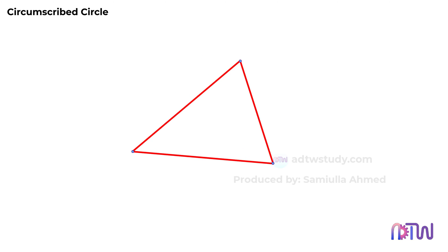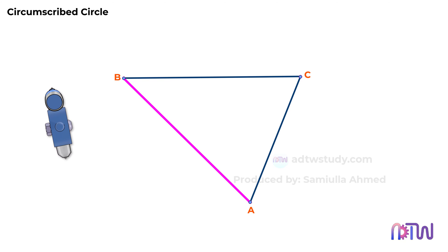Consider a triangle of any shape. To circumscribe a circle, we need to bisect any two sides of the triangle using the midpoint method. First, consider side AB. To bisect this side, take a compass and adjust it to a length more than half of AB.